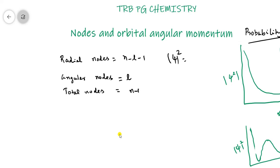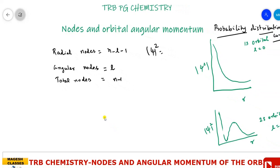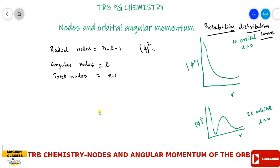Here n is the principal quantum number and l is the azimuthal quantum number. So using these formulas, you can easily calculate the number of nodes. For the 1s orbital, n is equal to 1 and l is equal to 0. Substituting: 1 minus 0 minus 1 equals 0. So for the 1s orbital, there is no node.